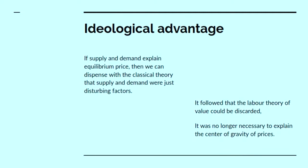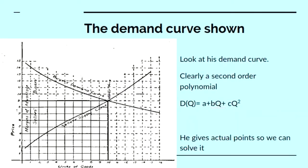This had certain ideological advantages. If supply and demand explain equilibrium price, then you can dispense with the classical theory that supply and demand were just disturbing factors. And if supply and demand determine value, then the labour theory of value can be discarded. It was no longer necessary to explain the centre of gravity of prices, because that was now given by the intersection of these two curves.